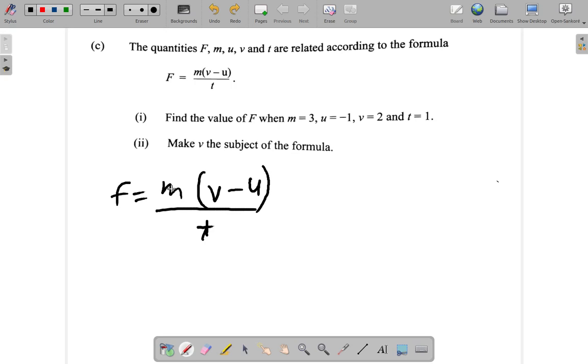We want V, we want V equals. Not all of this equal, just V alone. So get rid of the T first. Multiply by T. T cancels T. So you have Ft equals M times V minus U.